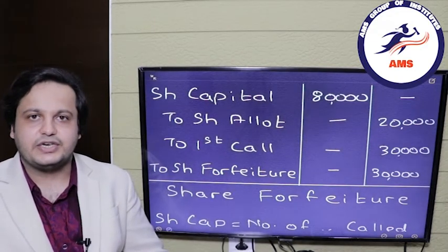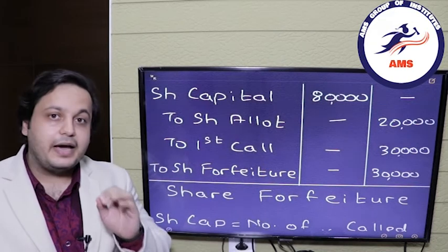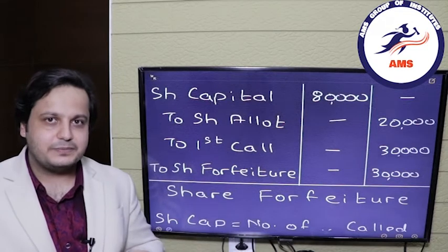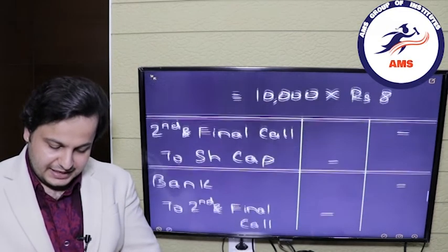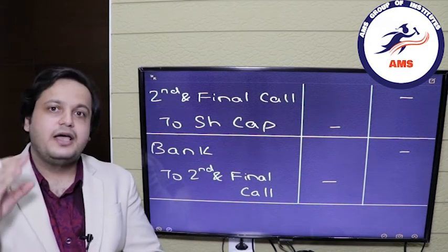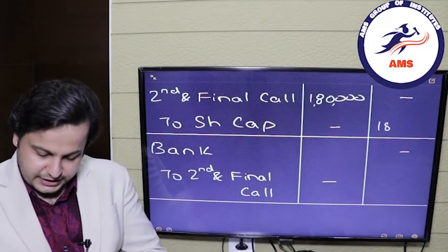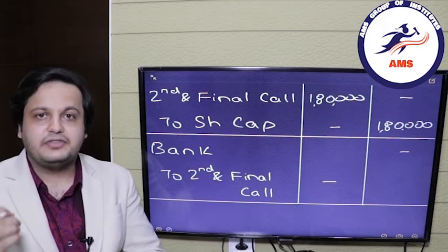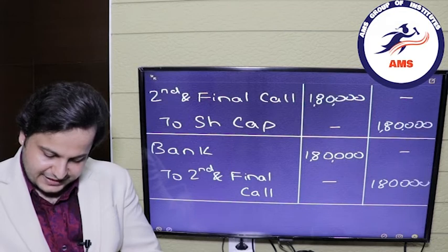The question is not over yet — the second and final call is still to be passed. Since 10,000 shares have been forfeited, we had issued 1 lakh shares, so the remaining shares are 90,000. The second and final call entries will be for 90,000 shares only. The capitalization entry is second and final call account debit to share capital: 90,000 multiplied by rupees 2, which is 1 lakh 80,000 rupees. Since the defaulting shares have already been forfeited, there is no default, and we receive the full 1 lakh 80,000 rupees. Bank account debited by 1 lakh 80,000 and second and final call credited by 1 lakh 80,000 rupees.